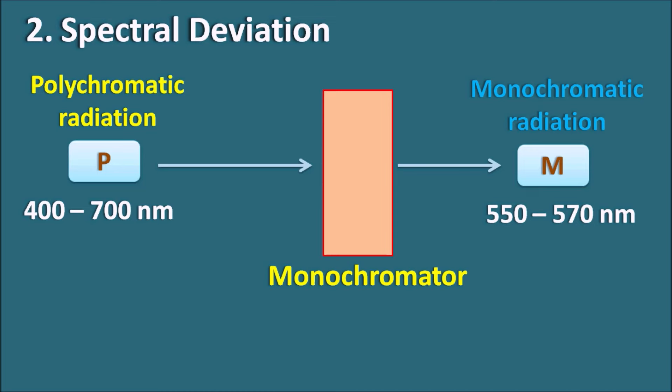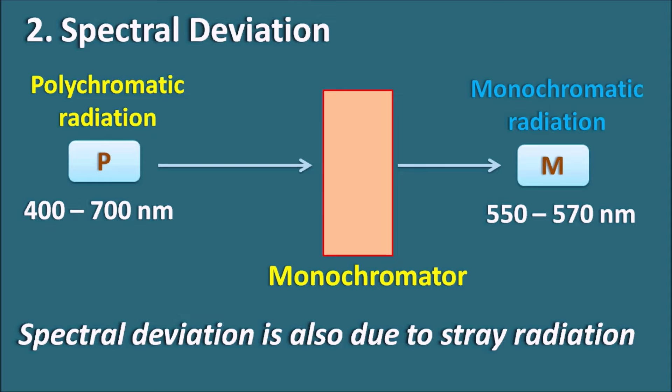Spectral deviation can also occur due to stray radiation. Stray radiation is unwanted radiation that reaches the detector resulting from reflection, refraction, or scattering of light by solid particles or other molecules. To prevent stray radiation, we should use a polished surface on the sample cell, thoroughly filter the solution, and use a blank determination to eliminate stray radiation. So spectral deviation is mainly caused by polychromatic radiation as well as stray radiation, and polychromatic radiation can be eliminated by selection of a suitable monochromator.